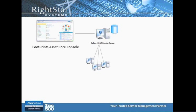The first thing I want to discuss briefly is the architecture. Footprints Asset Core is 100% web-based. All the communication between any of your endpoints — be them workstations, laptops, or servers — is done over HTTP protocols. Very secure. That includes the console-based activities, so your technicians in the field, at various locations throughout your organization, can from any browser initiate the Asset Core console to work on, look up, report against, and manage any of the assets under control.